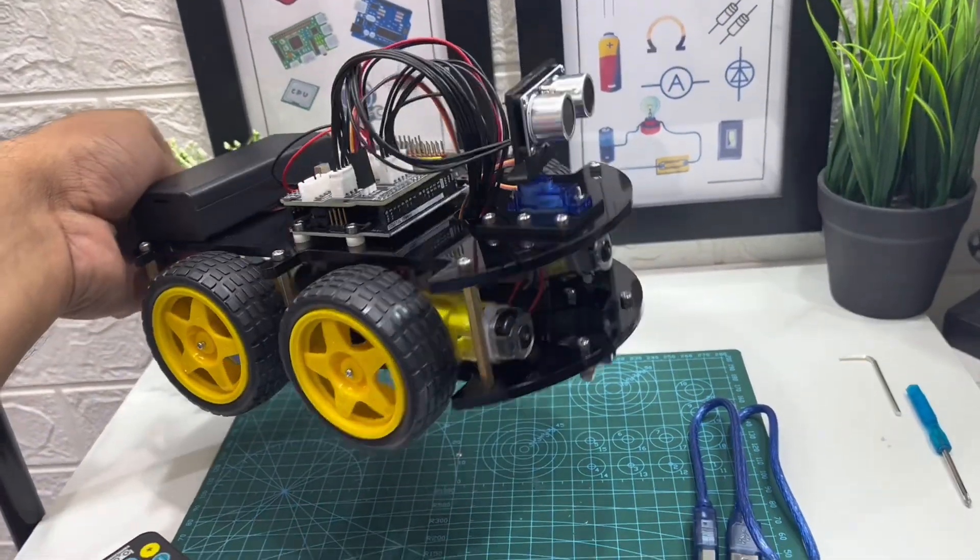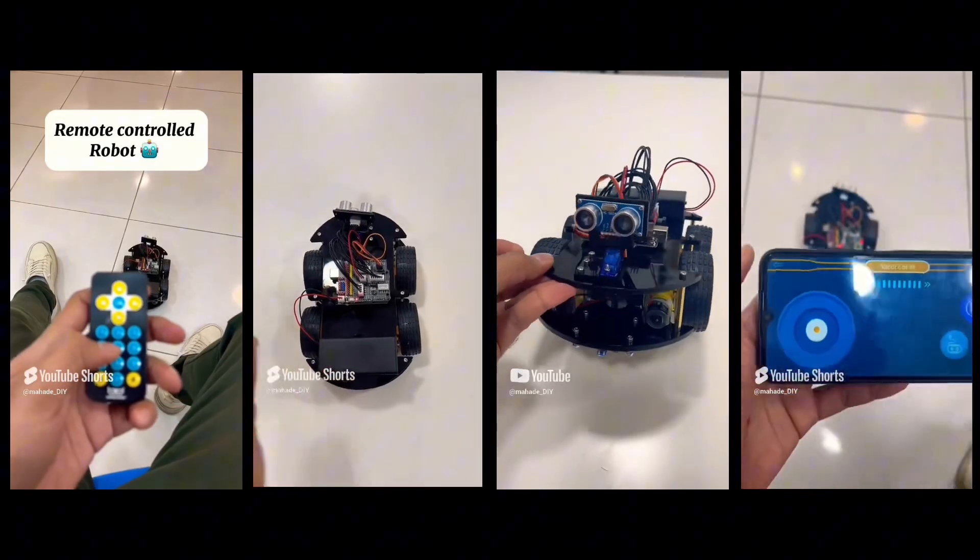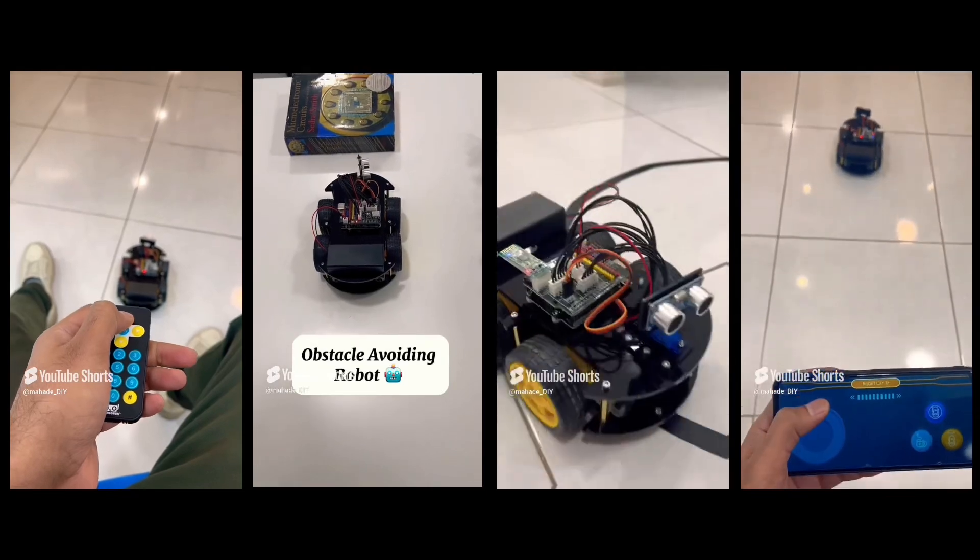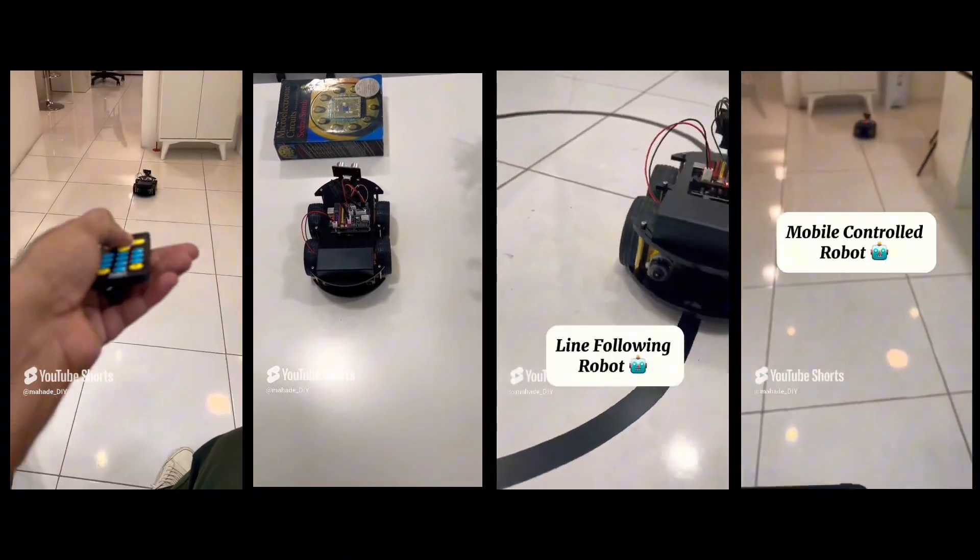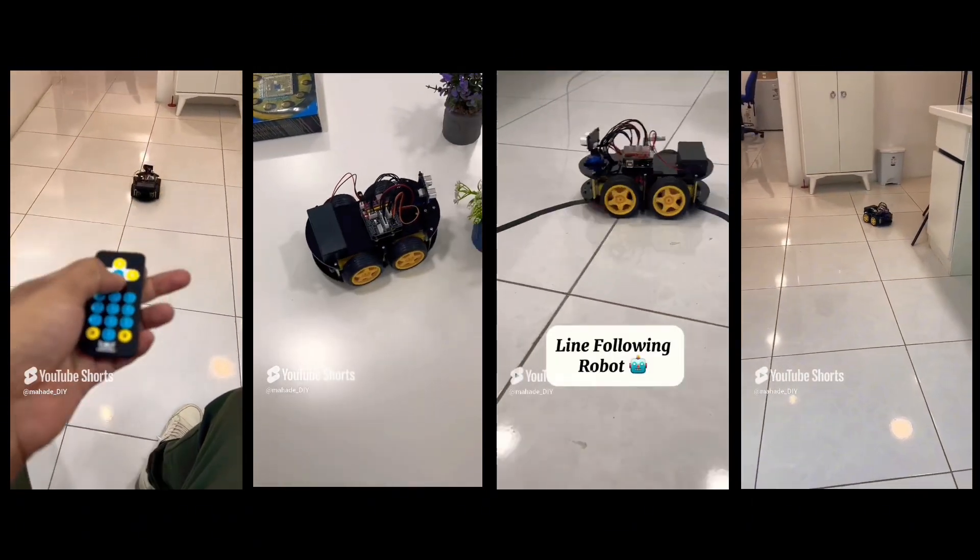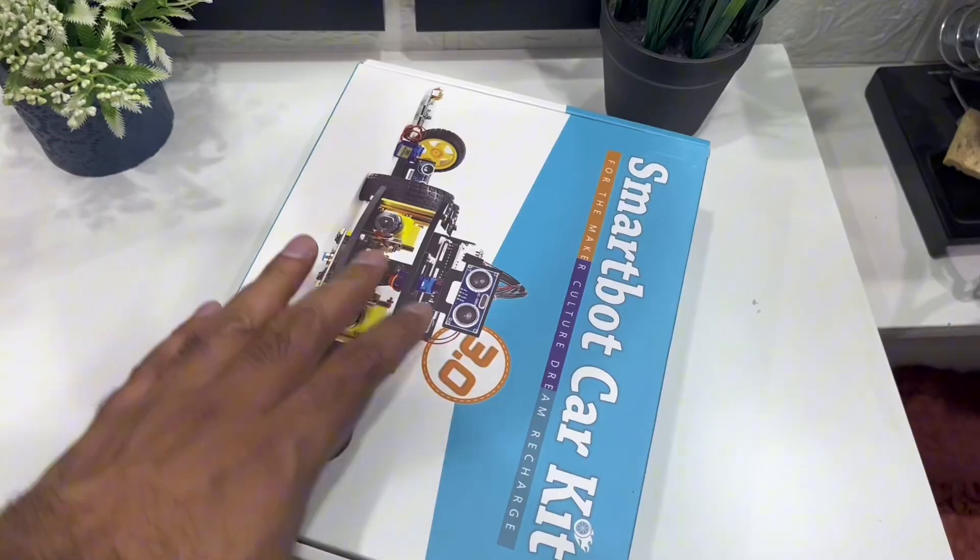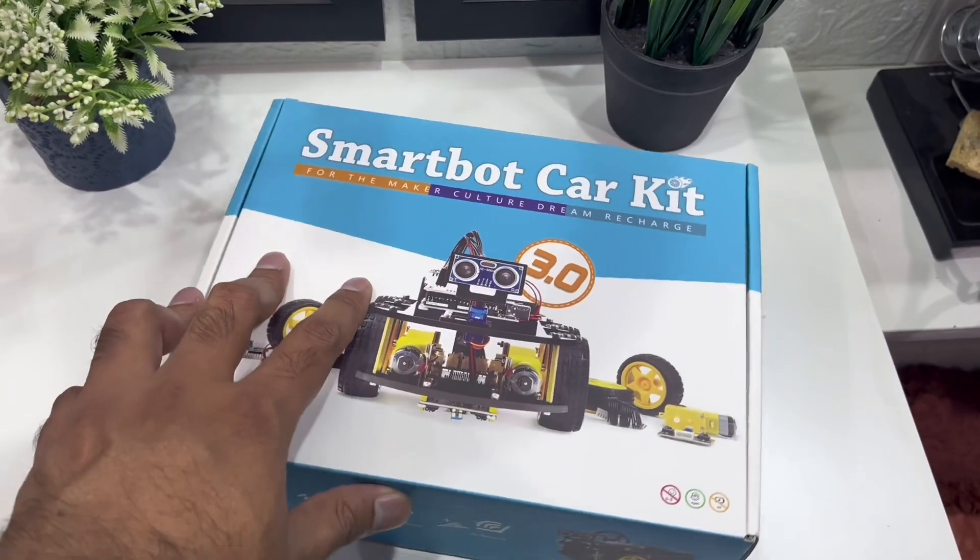Hey everyone, welcome back to my channel. Today we are going to assemble this awesome 4-in-1 robot car. This is an Arduino compatible smart car designed for beginners. This kit comes with several leveled bags containing all the parts we'll need.